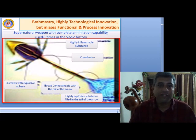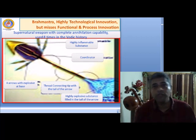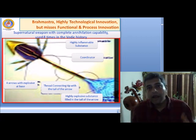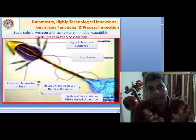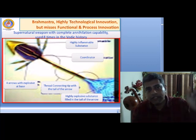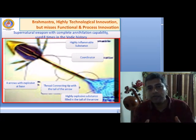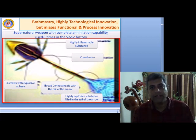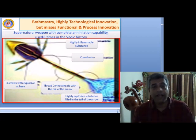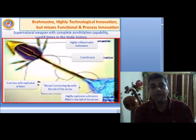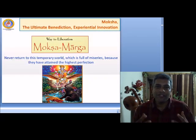Now let us look at another technological innovation from the Vedic times: Brahmastra, considered one of the best technological innovations. The front part consists of a highly inflatable substance; just below are four arrows containing explosive material forming the base; the four arrows are connected by a thread linking tip to base; and finally, a highly explosive substance fills the back-end. This is the most technological weaponry machine in history. However, from an operational and process perspective, it is very cumbersome, requiring a lot of practice and benedictions — so it does not deliver full-fledged experiential innovation.